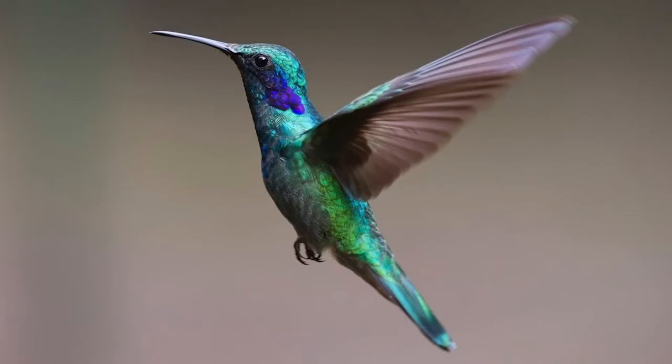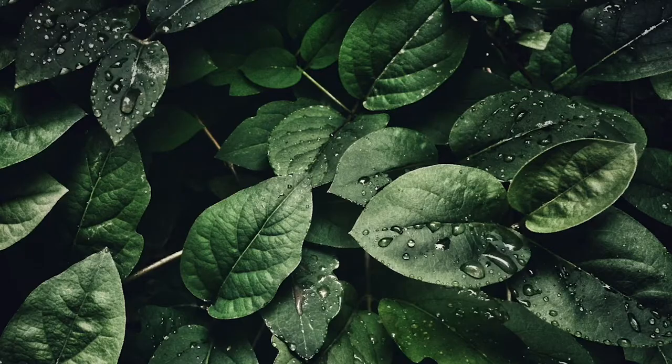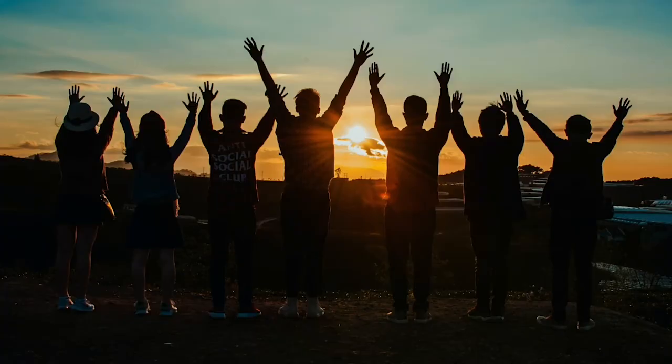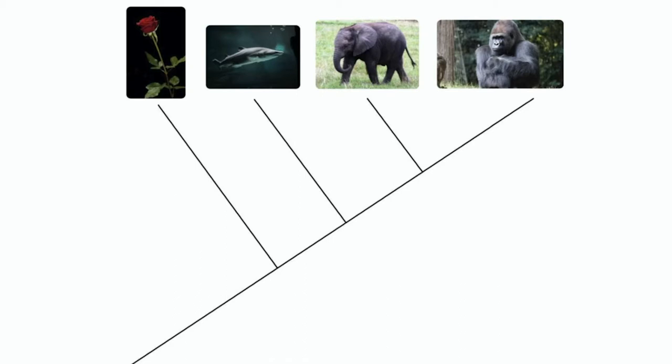There are so many different living things out there in the world — birds, plants, bacteria, humans. How can we tell which are more closely related to each other? Well, for hundreds of years, scientists have used this tool called a phylogenetic tree.